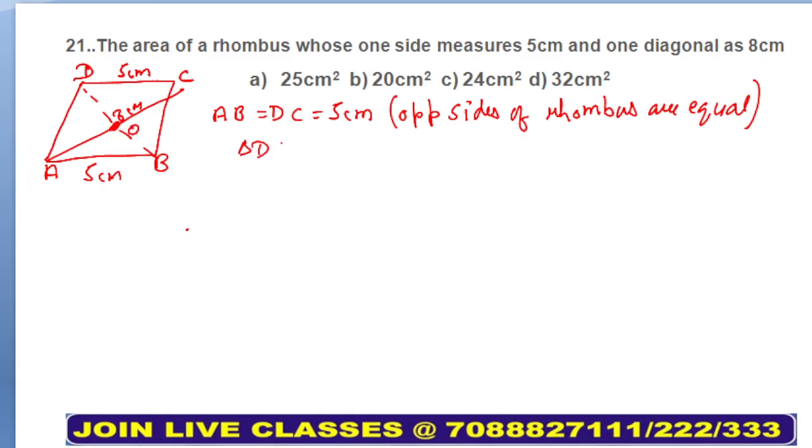In triangle DOC, OD square you need to calculate is equal to DC square minus OC square. DC square is what? 5 square minus OC square. DC is 4 because the diagonal is 8 and the perpendicular bisects it, so it becomes 4 and 4. This is 25, this is 16, this is 9. OD square is 9, so OD will be 3. OD is equal to 3, which is equal to OB because diagonals bisect each other.